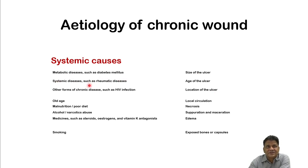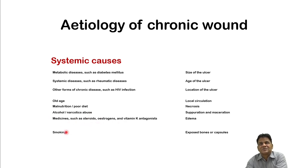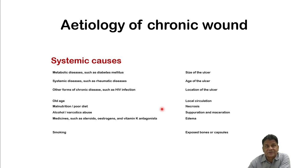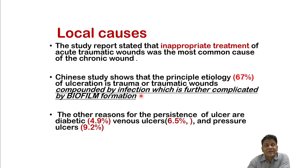The etiologies include metabolic diseases such as diabetes mellitus, systemic diseases such as rheumatoid arthritis, chronic conditions like HIV infection where immunity is compromised, malnutrition, poor diet, alcoholism, narcotic abuse, and medicines such as steroids, estrogen, vitamin K antagonists, and smoking. According to a Chinese study, 67 percent of ulcerations in trauma centers are compounded by infection, further complicated by biofilm formation.